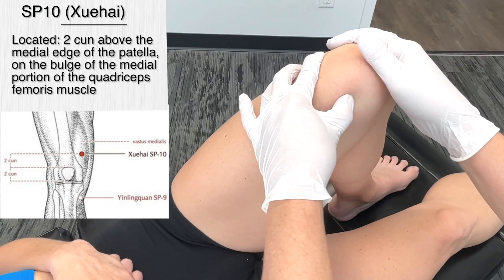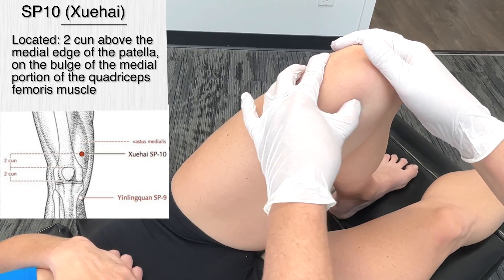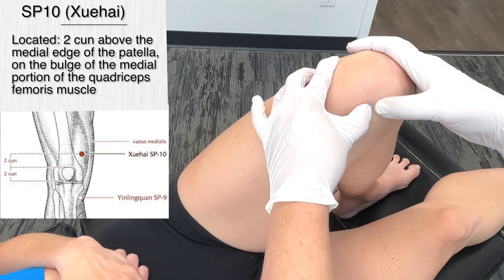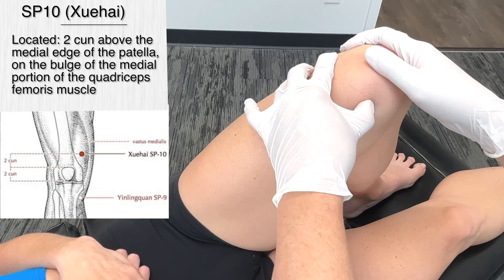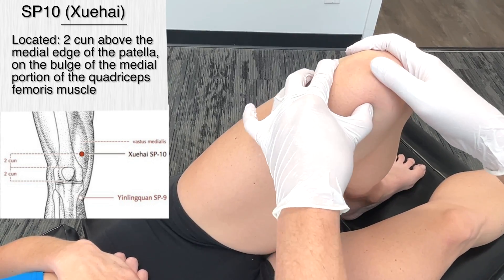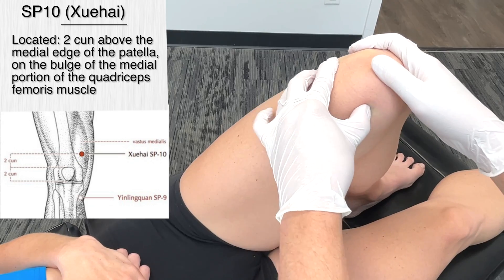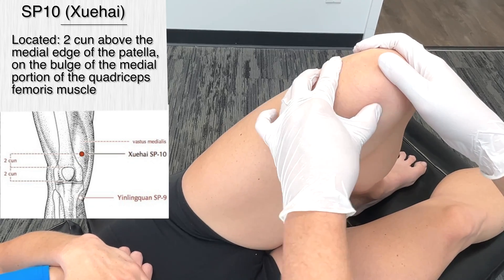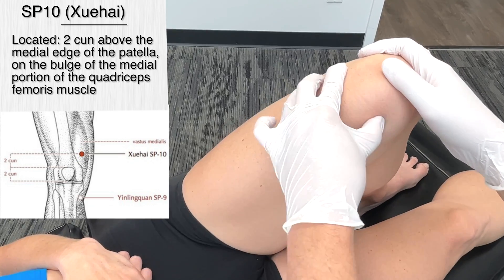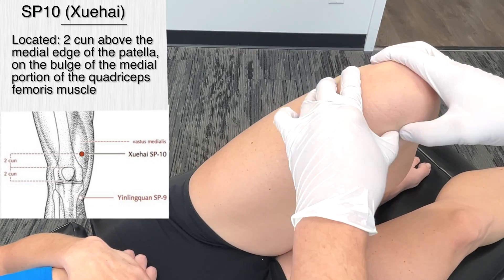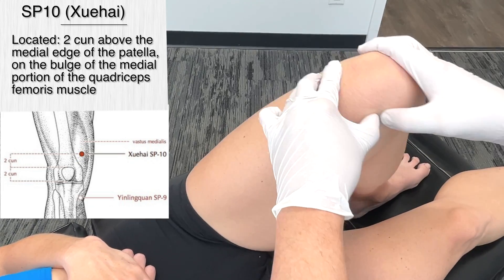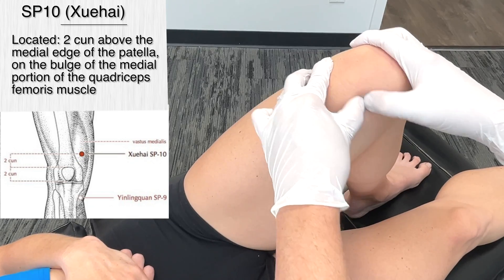We get in there and work this area out. This is a common one that I actually do acupuncture on. If we're using acupressure, we stimulate the area, getting in and working it out for about 30 seconds to three minutes.